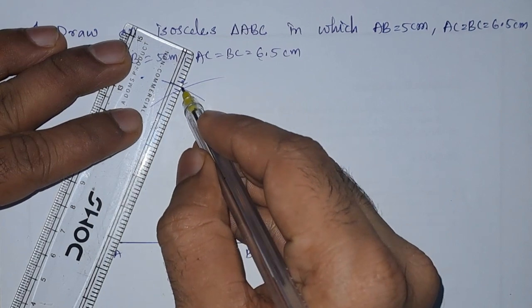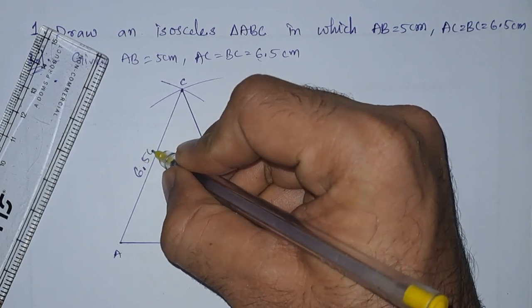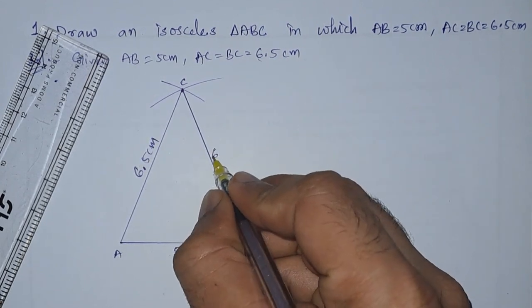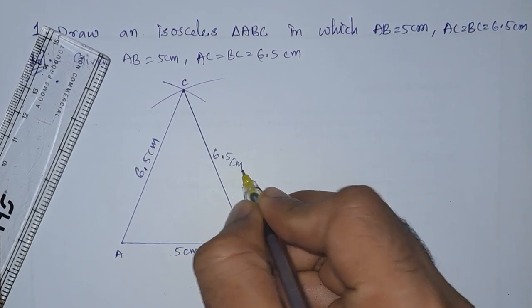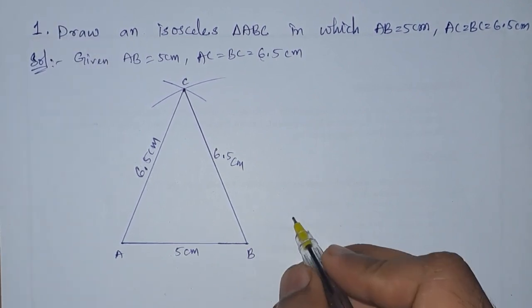AC. So these two are 6.5 centimeters, this is also 6.5 centimeters. Lastly, we will write down: